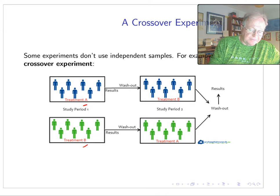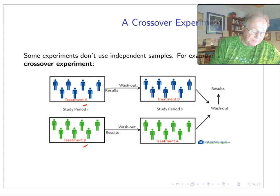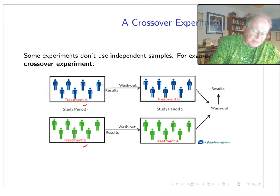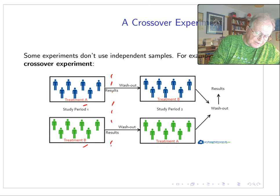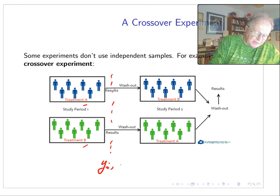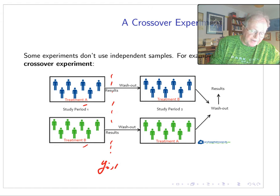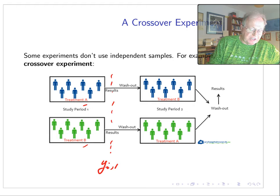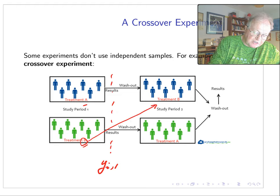So in a crossover experiment, we have two treatments, A and B. We have a set of subjects who are randomized into two treatment groups. In the first phase, one group is given treatment A, the other group is given treatment B, and then there's a measurement. So here's a measurement—so for each individual i, this will be measurement number one. We have a period called the washout period where subjects are allowed to get back to some sort of equilibrium, and then we flip the treatments.